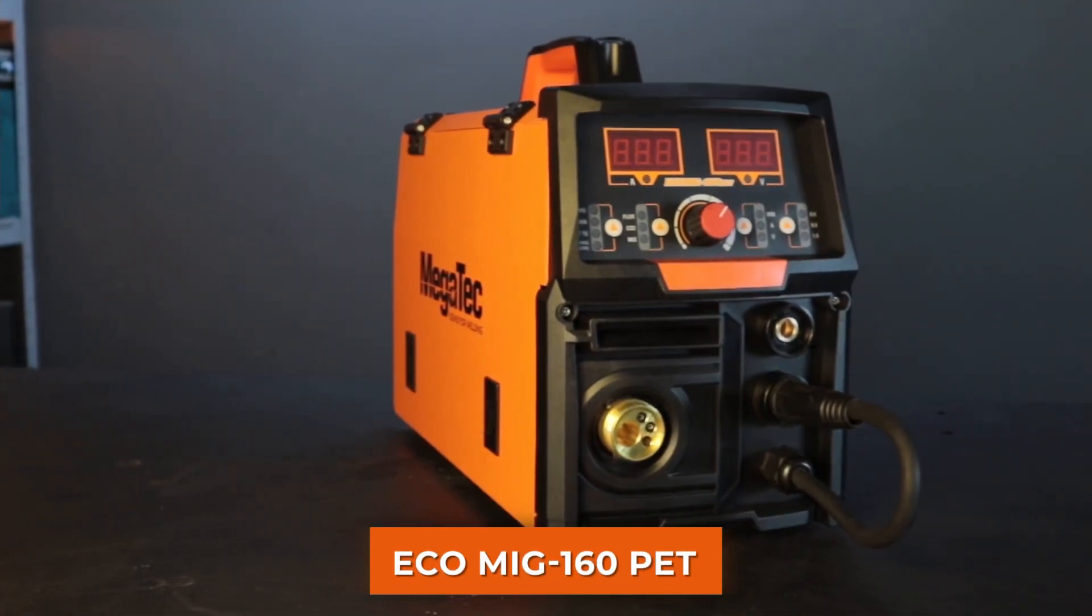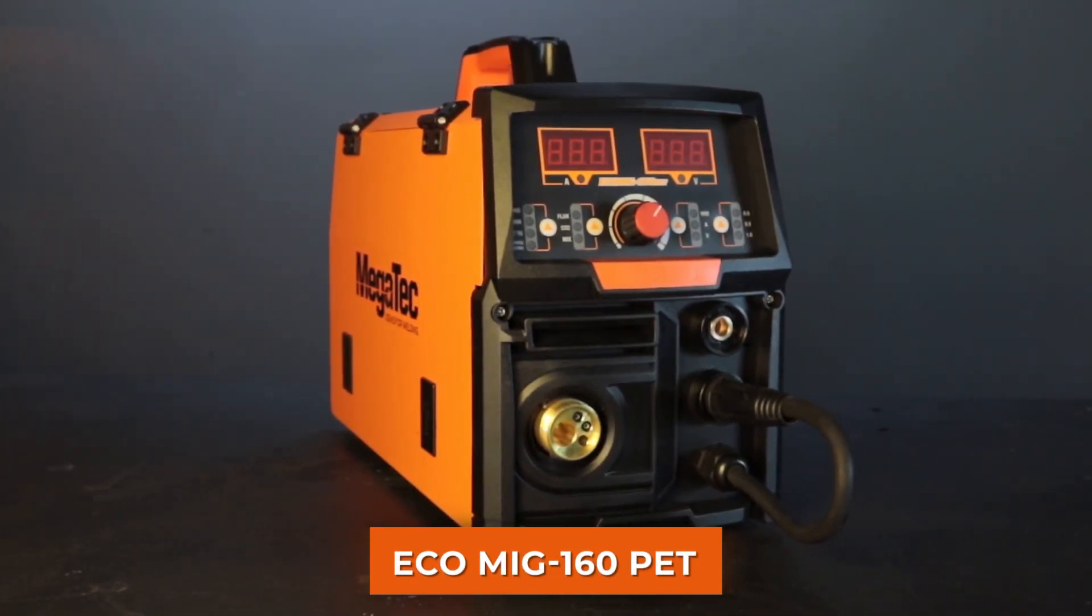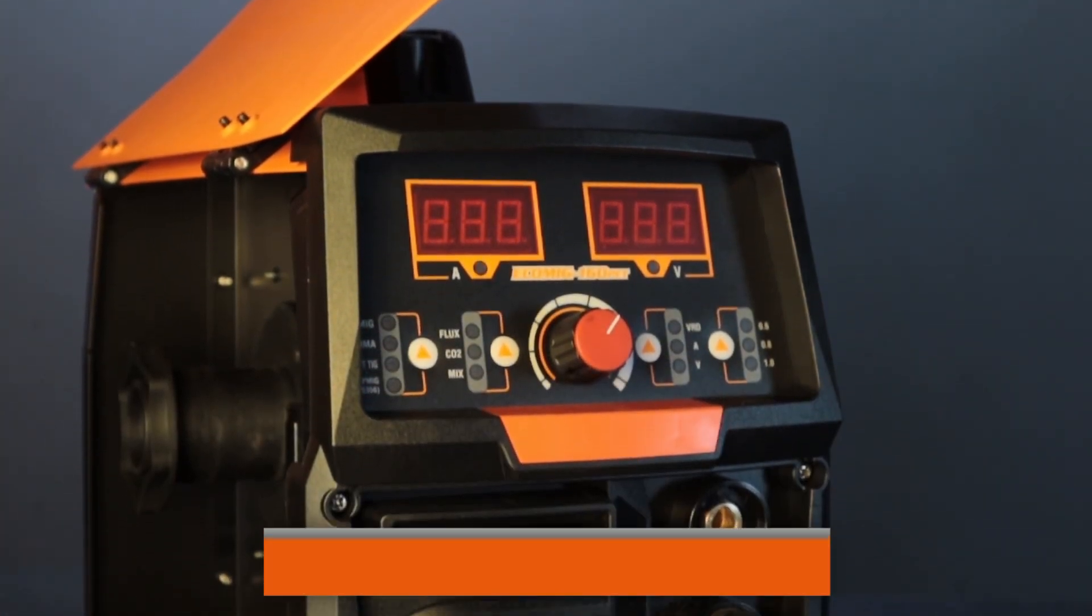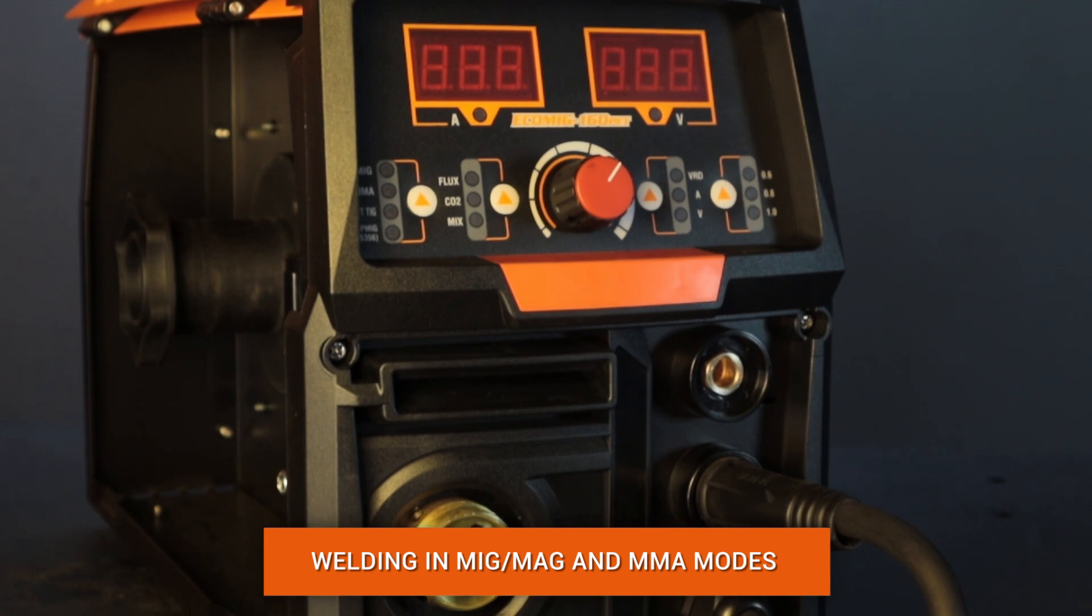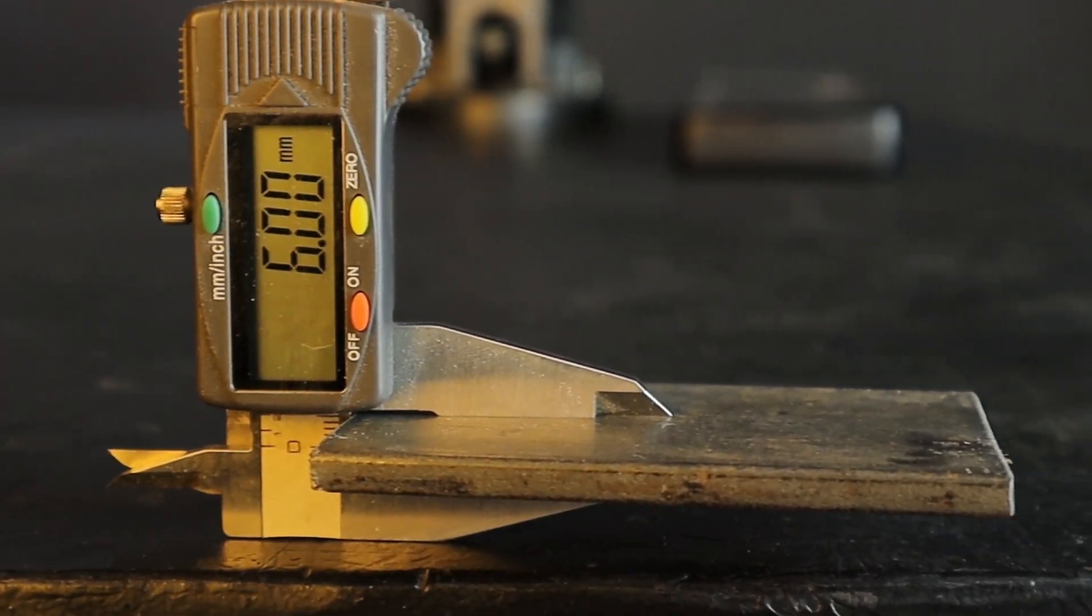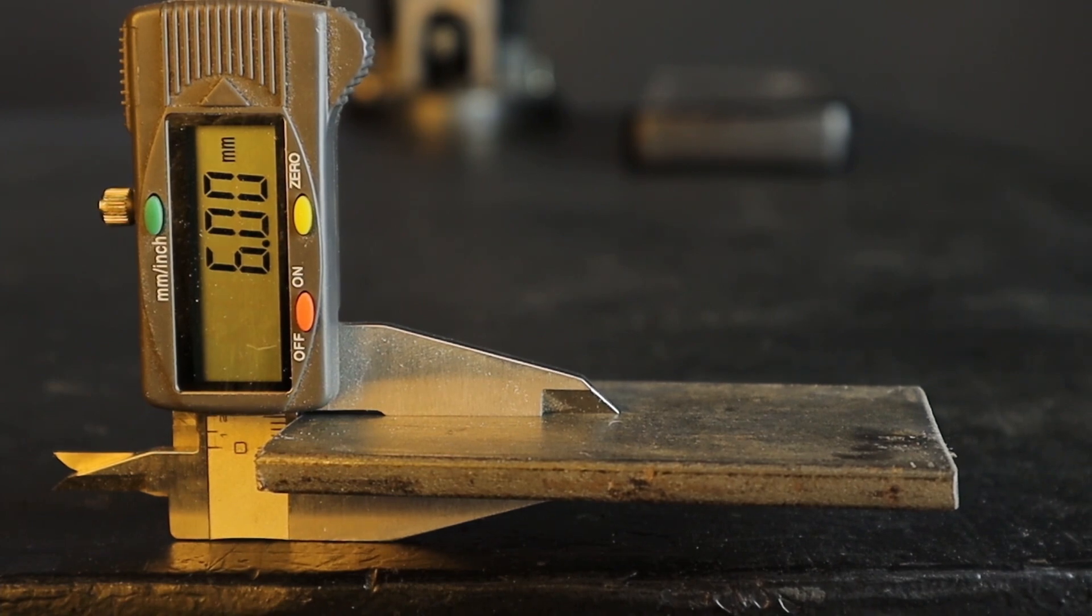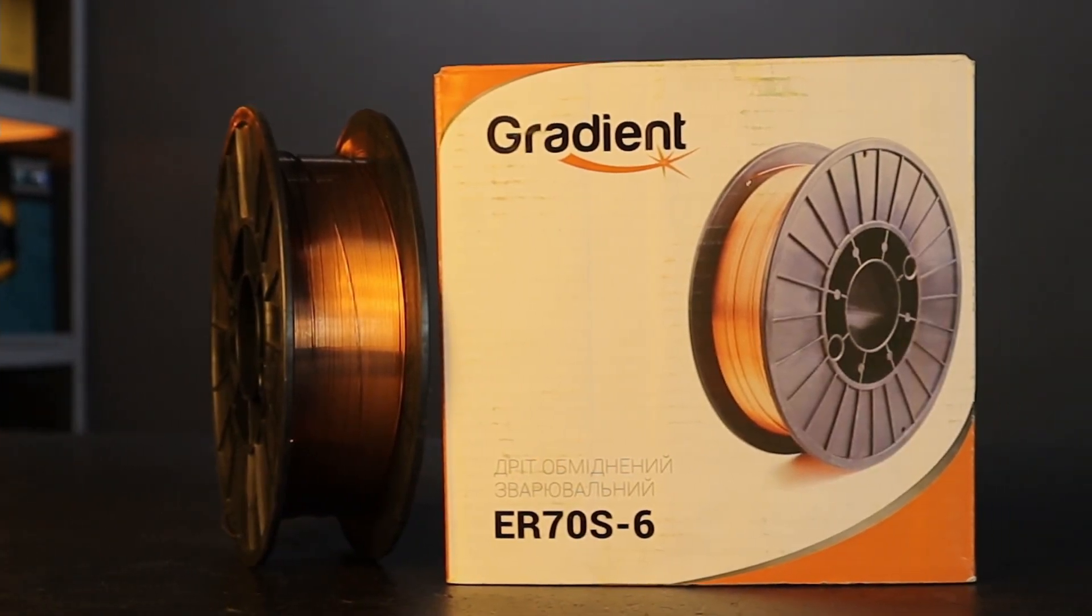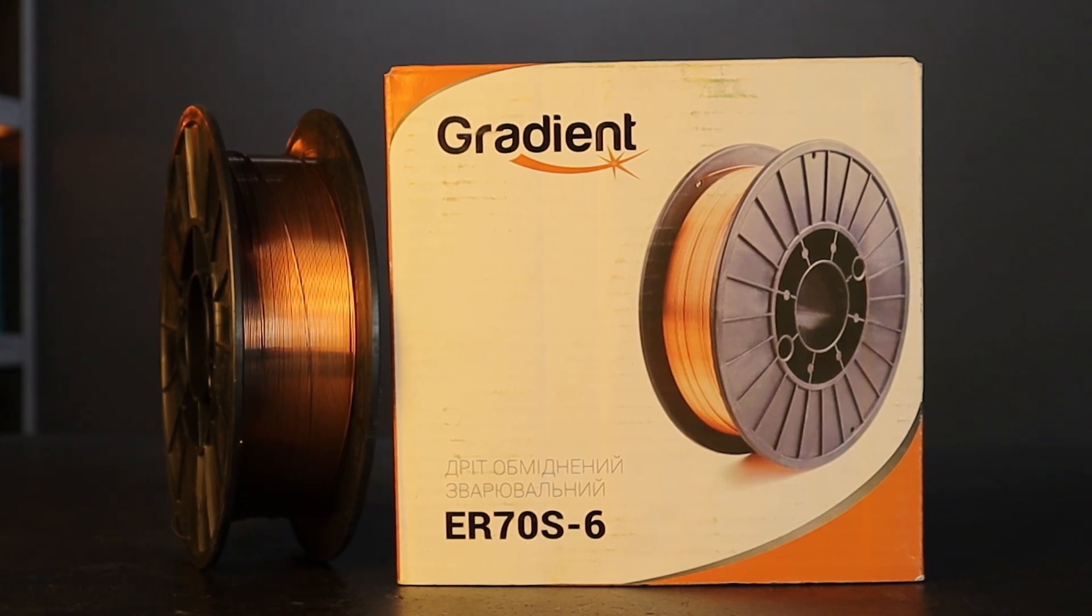In this video, we will use the EcoMeg 160PET semi-automatic welding machine, which simultaneously welds in both MIG-MAG and MMA modes for training. We will weld low alloy steel with a thickness of 6 mm and 3.2 mm electrode and a 0.8 mm welding wire from Gradient trademark.